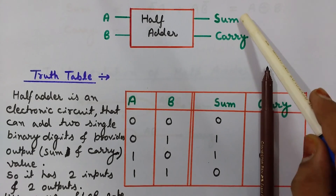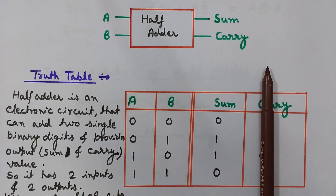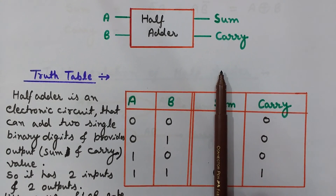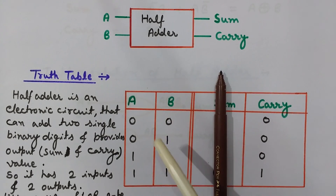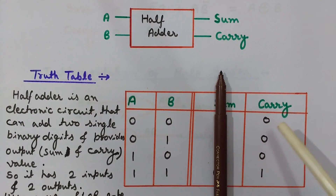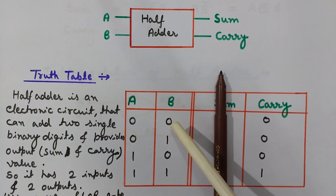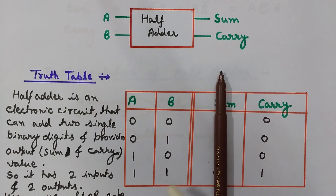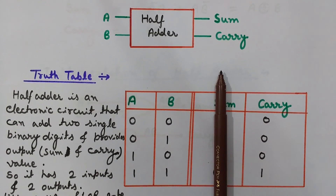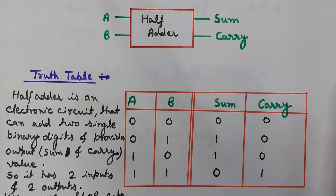Now if you focus on the carry column, you can see that the carry is 0 whenever any input is 0, and the carry is 1 only when both inputs are 1. This is the behavior of an AND gate. Therefore, Carry = A AND B.